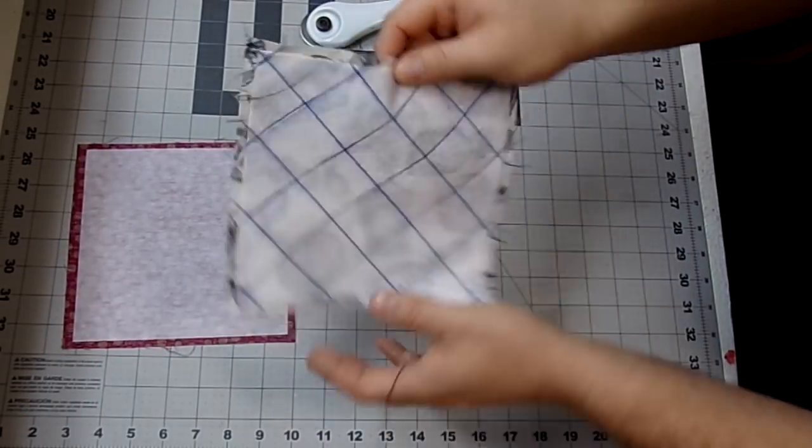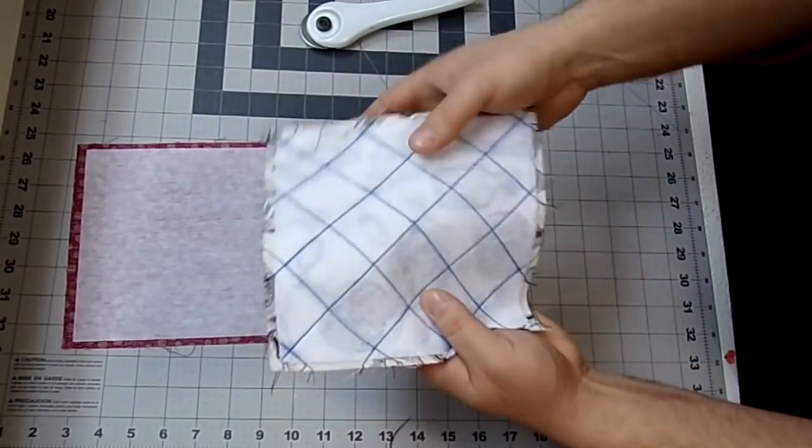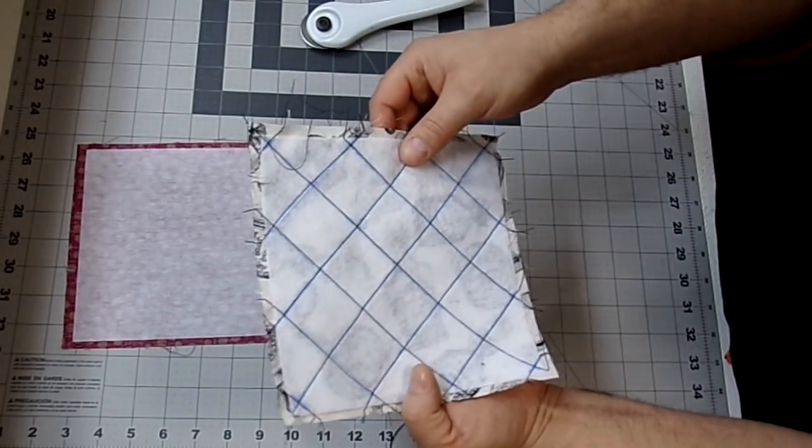Now I'm done with one side. I'm just going to flip it and do the other lines. All right guys, so it should look like this when all your quilting is done. And the great thing about these friction pins, if I just hit it with a hot iron, they disappear.